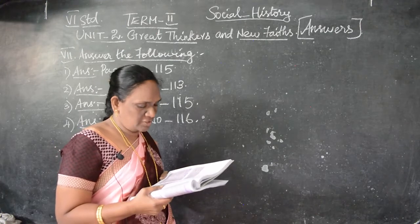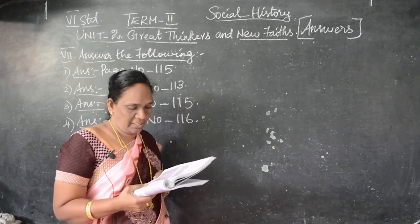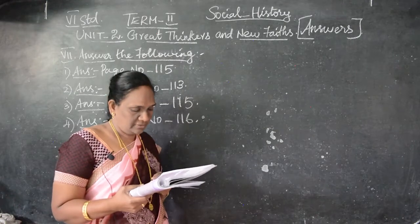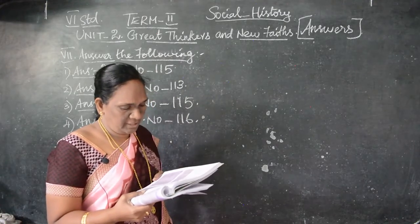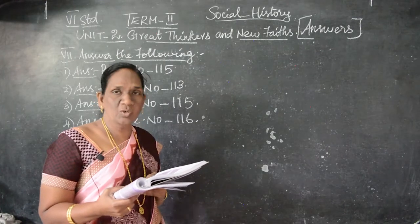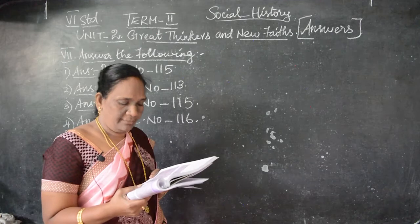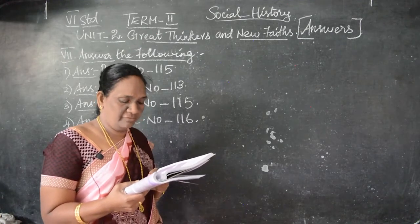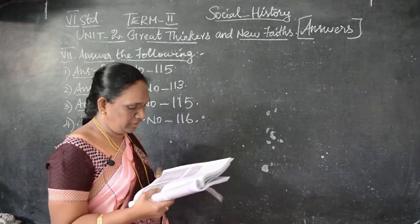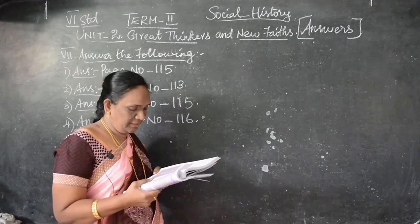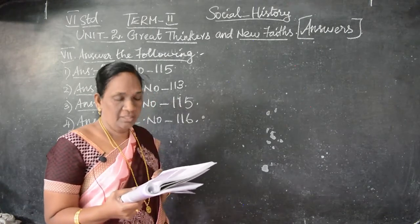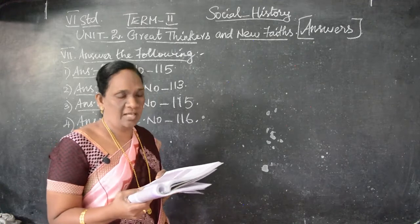Second point: Hinayana practiced austerity; Mahayana observed elaborate rituals. Third point: Hinayana believed salvation of the individual as its goal; Mahayana believed salvation of all beings as its objective. Fourth point: Hinayana used Prakrit language; Mahayana used Sanskrit language.